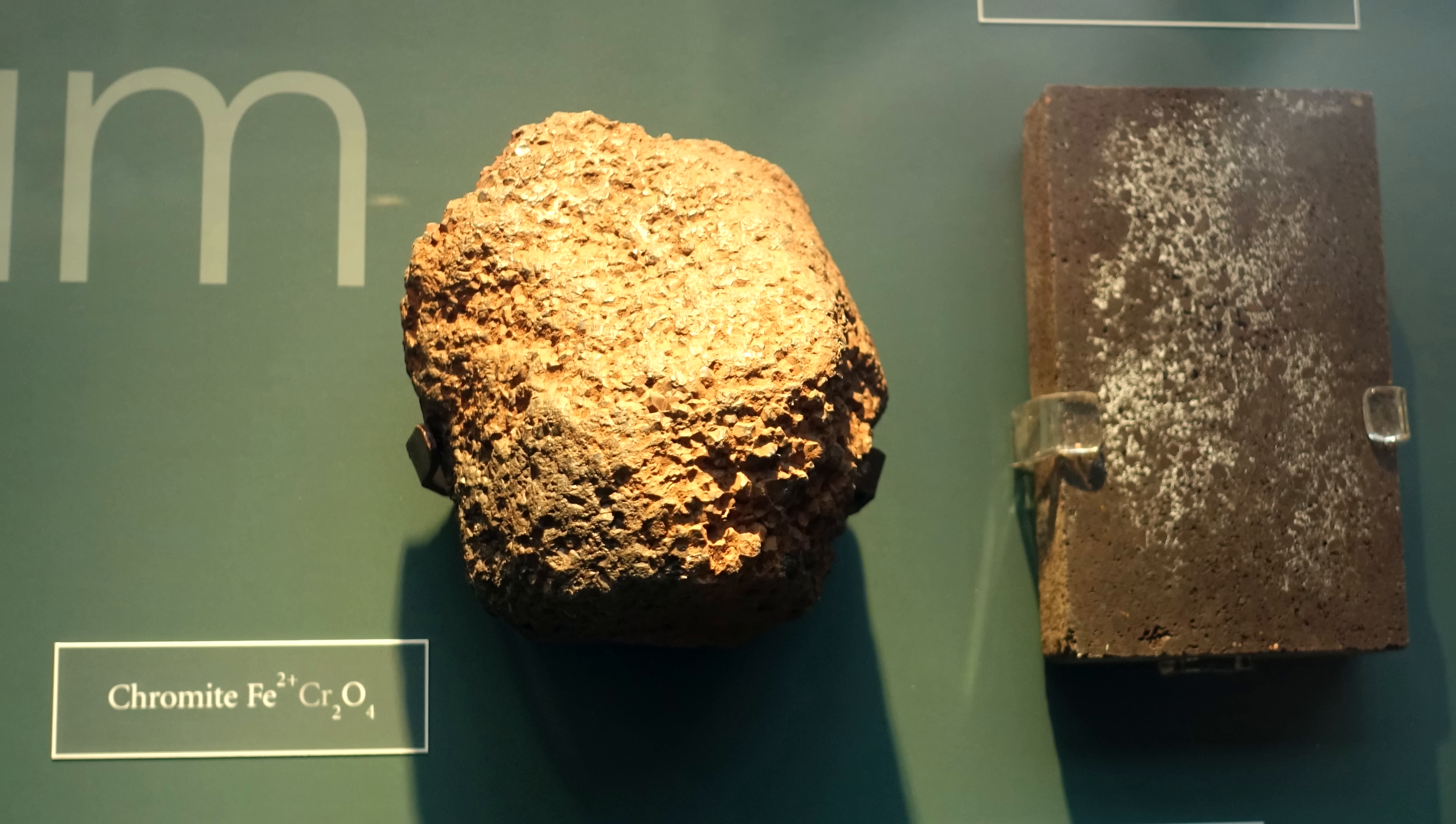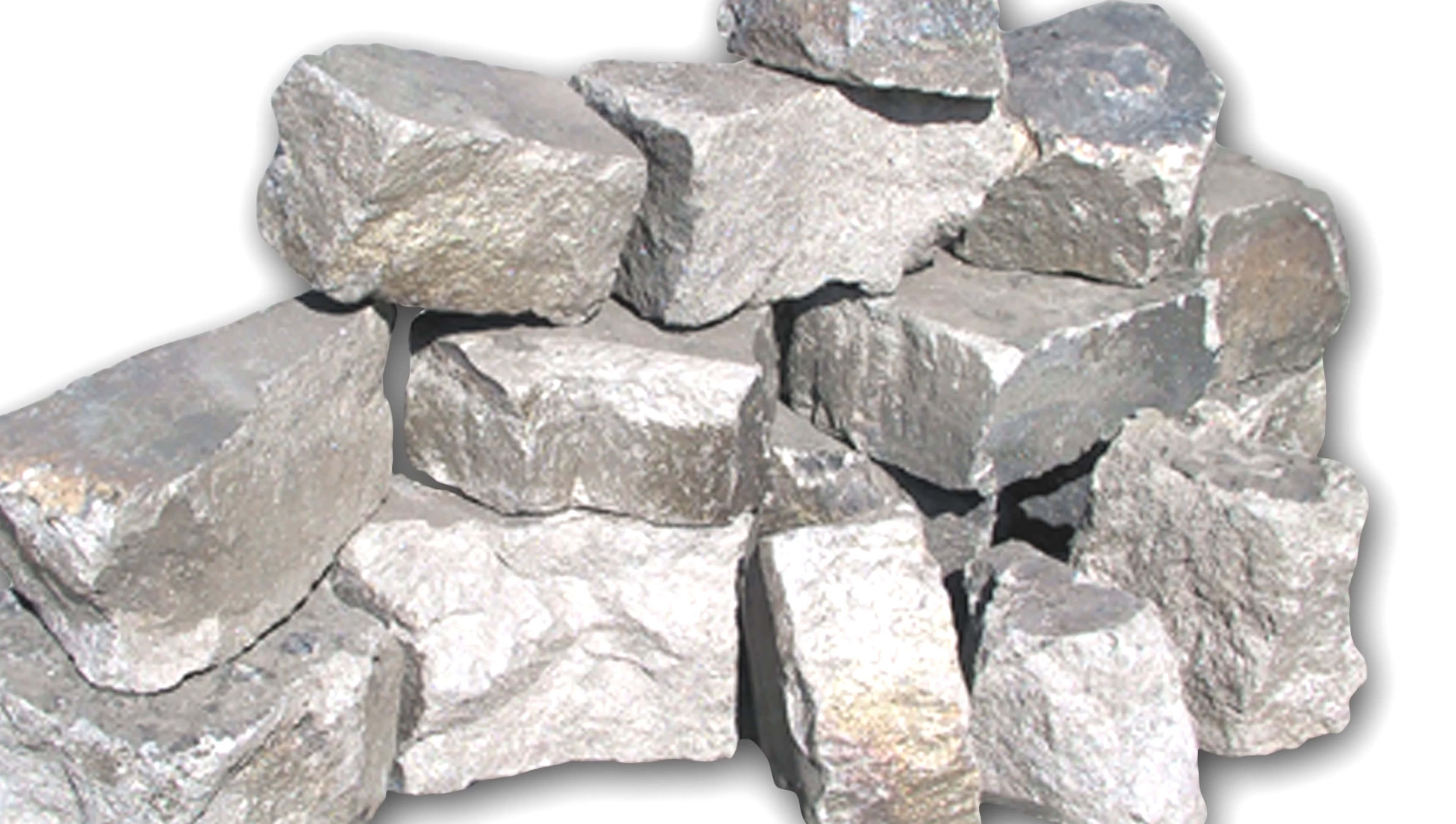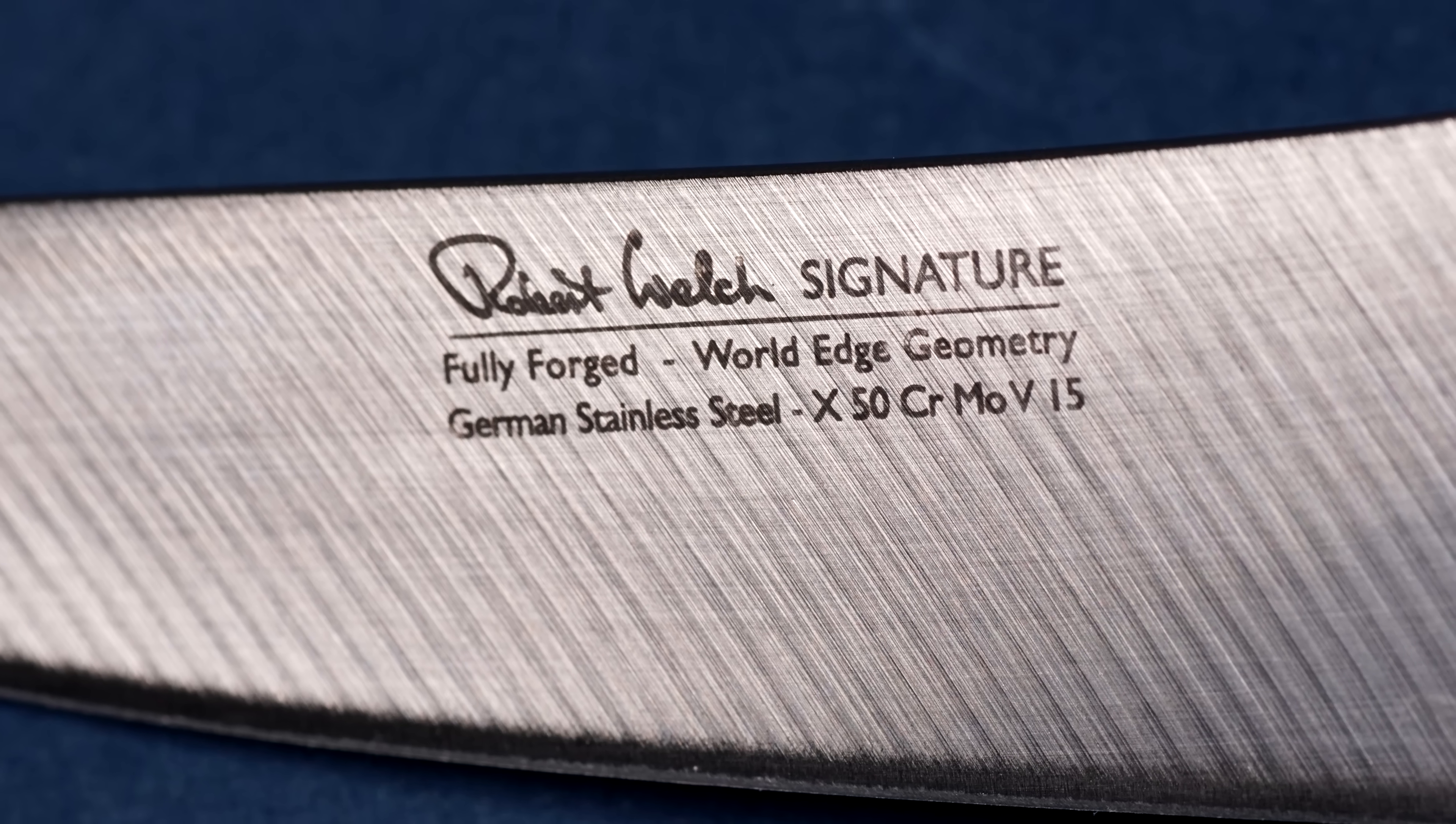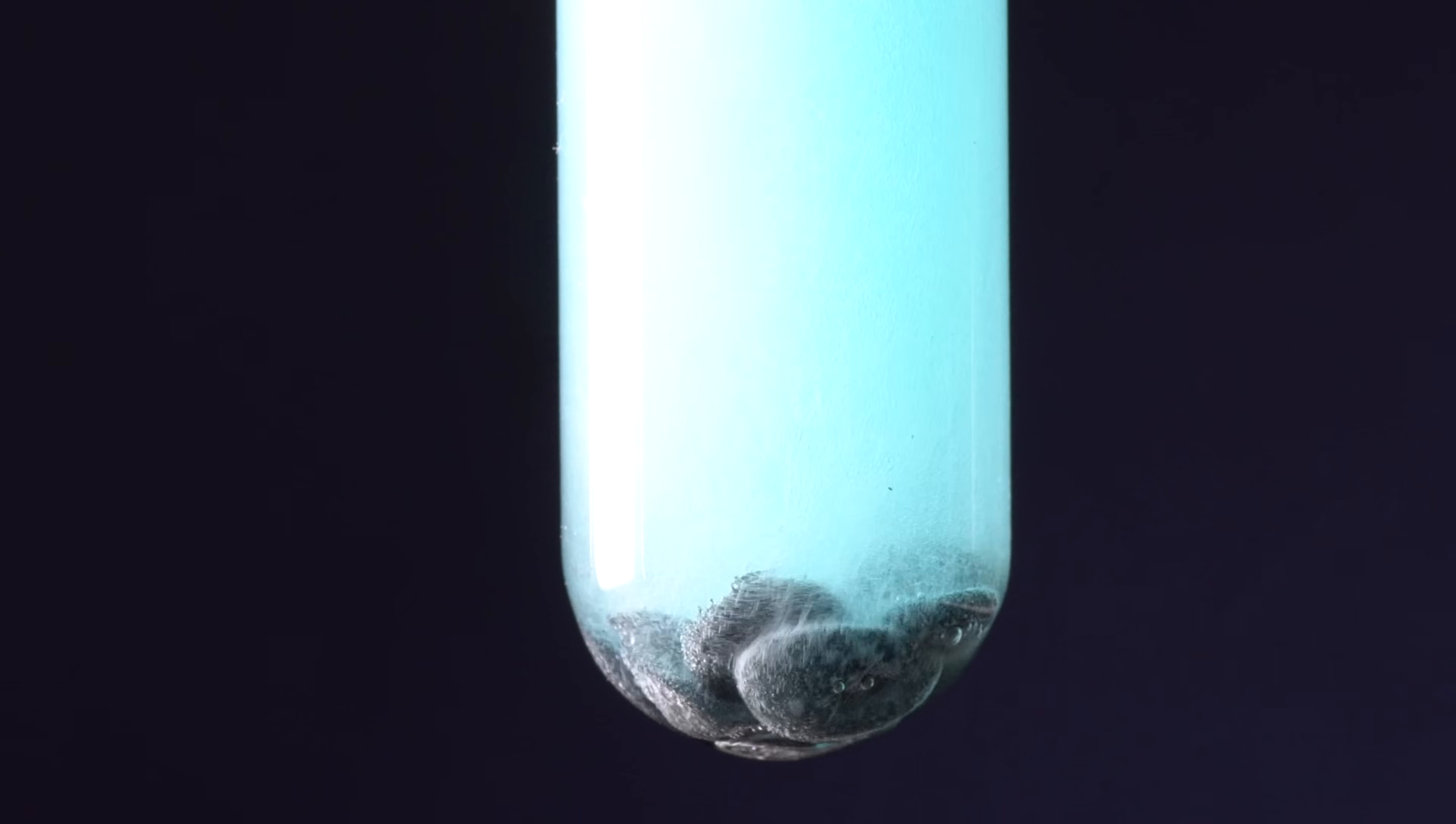Metallic chromium is obtained from the chromium ore mineral by reducing it using carbon to produce ferrochromium, an alloy of chromium and iron, which is used in production of stainless steel. I will now turn to the chemical properties of chromium, which this metal is highly enriched with.